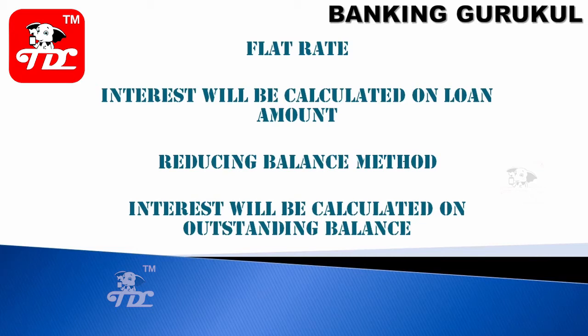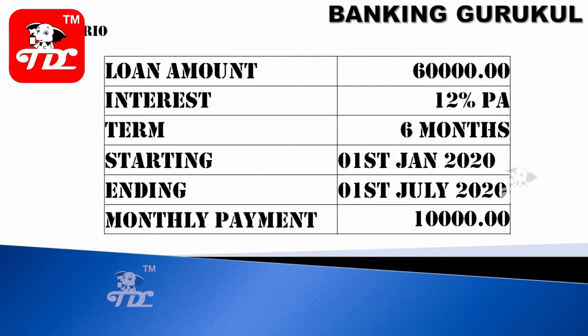In the reducing balance method, your interest is calculated on the outstanding balance. As you pay your EMI every month, the outstanding balance decreases, so the next month's interest is calculated on that reduced amount. In my example, I've taken a loan of 60,000 rupees at 12% per annum for six months, starting January and ending July 2020, with a monthly payment of 10,000 rupees.